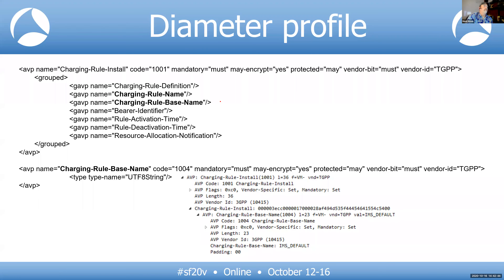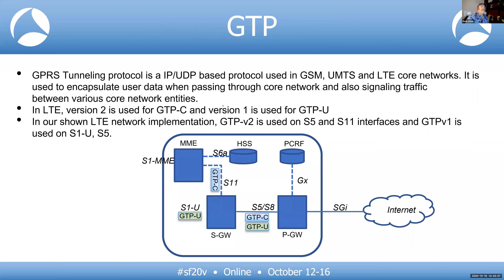That covers Diameter. The next protocol is GTP — GPRS Tunneling Protocol. It is UDP-based; the reliability is built into the protocol itself, which is why UDP is used. It is used for GSM, UMTS, and LTE, with elements now used in 5G as well. GTP encapsulates data as it passes through the EPC.